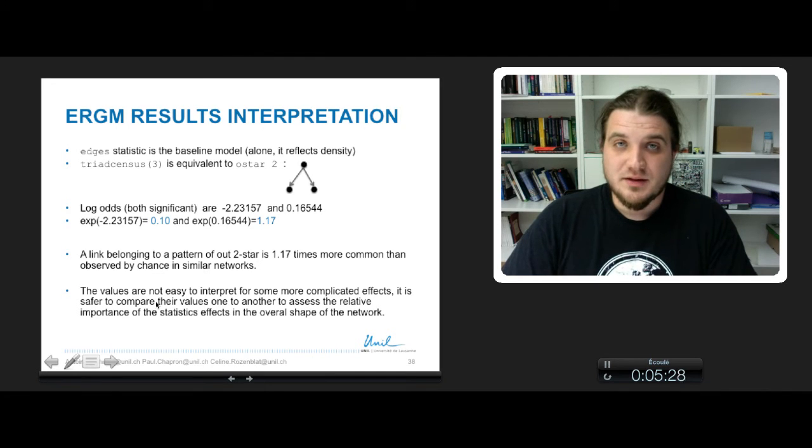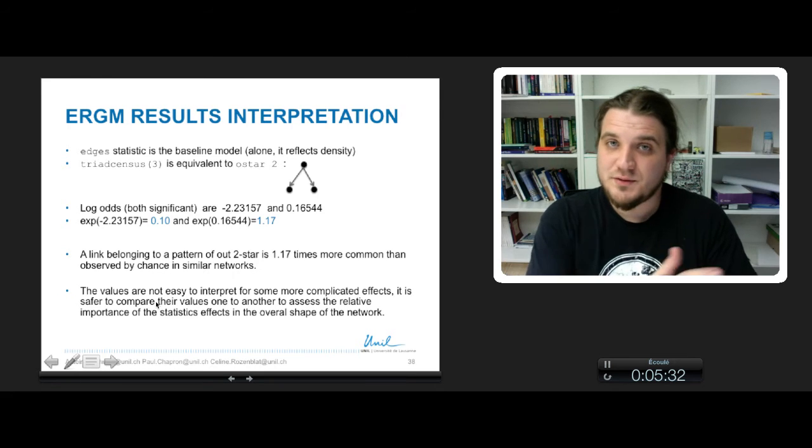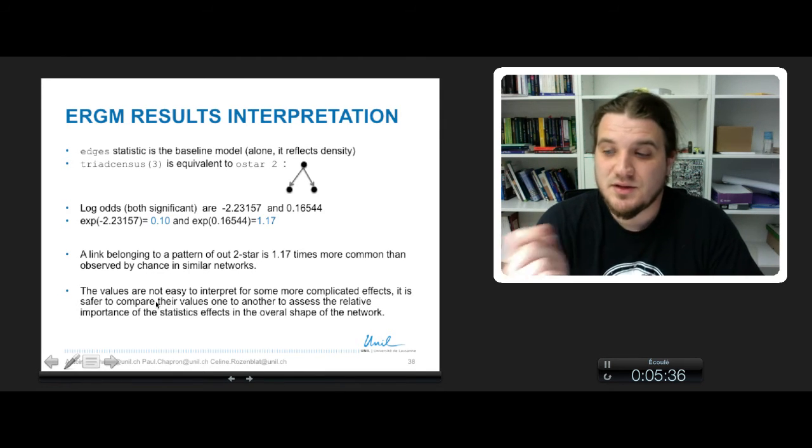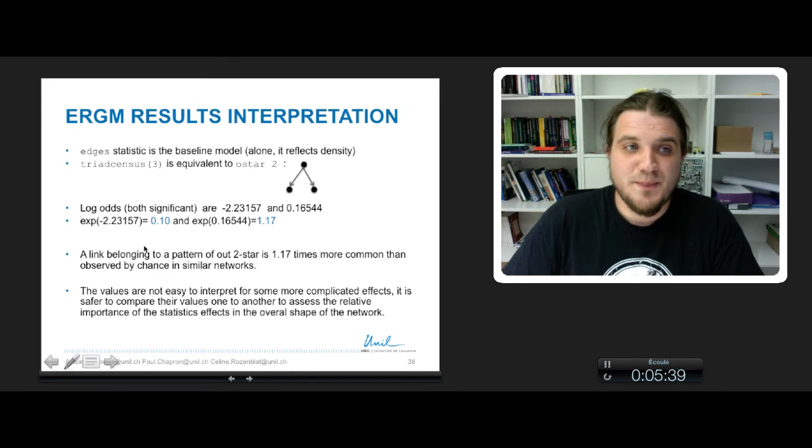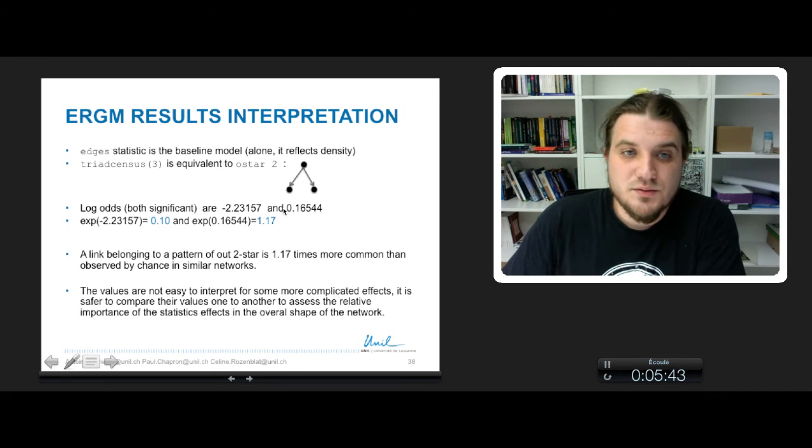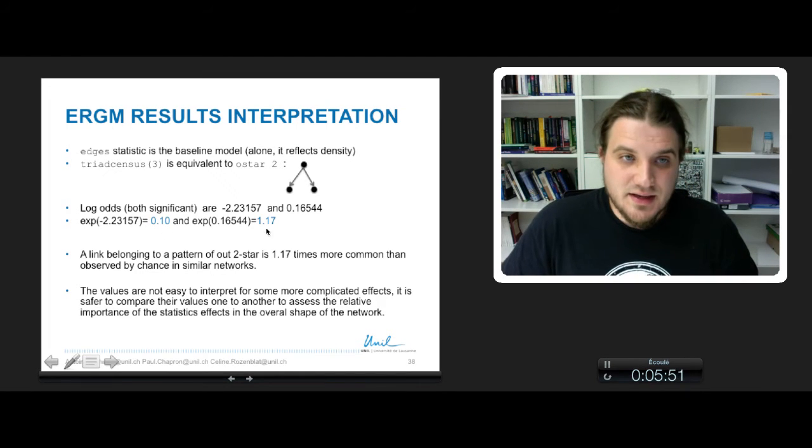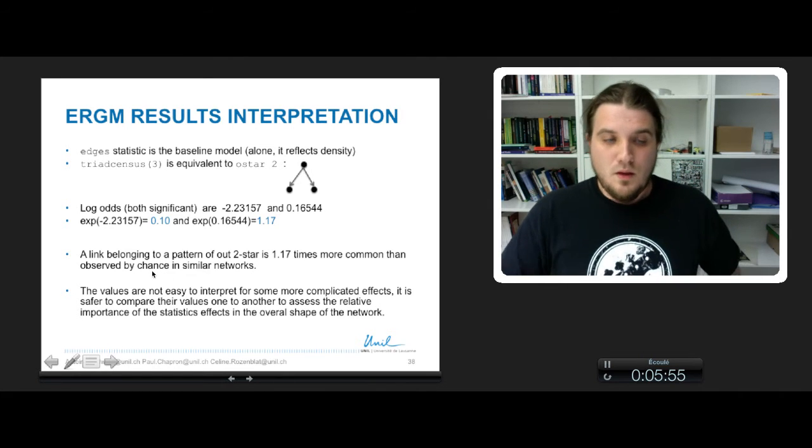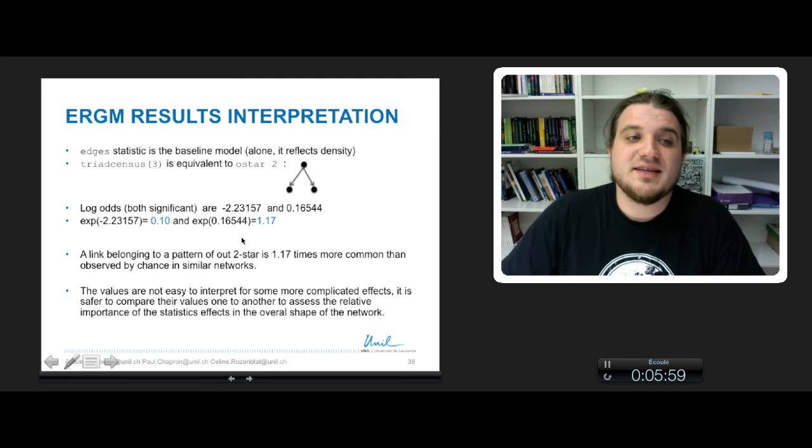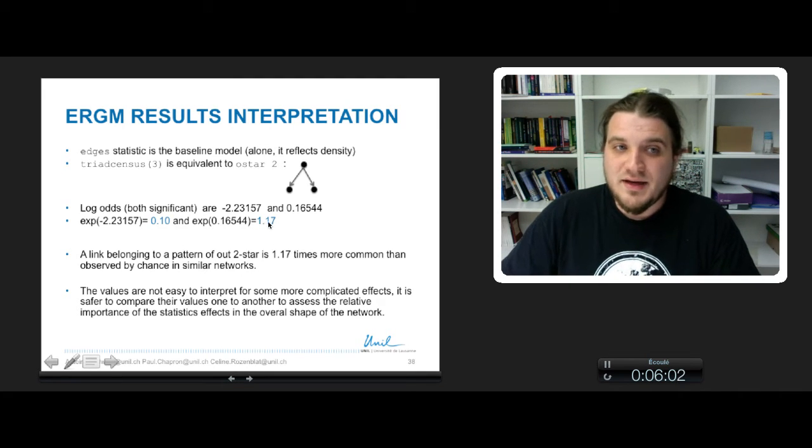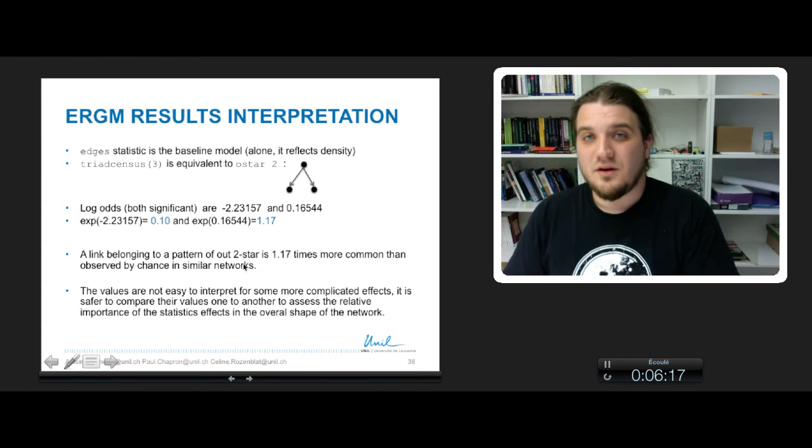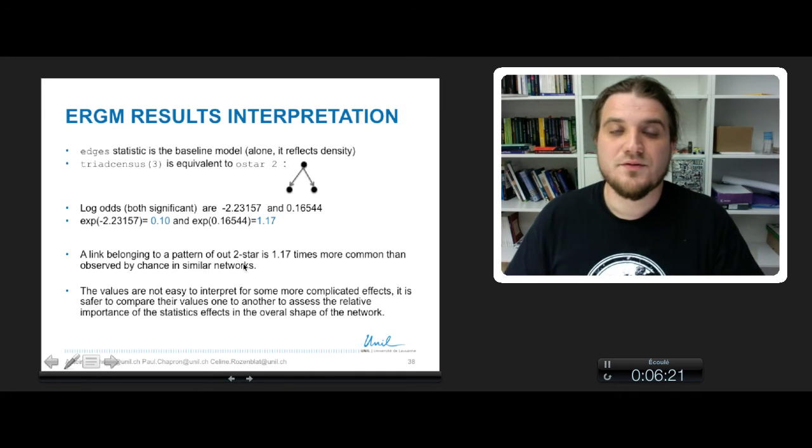ERGM results interpretation in the previous case of our simple model with edges and triad census for out-star-2 gave us these two values: minus 2.2 and 0.16. We take the exponential of these two values and we have 0.10 and 1.17. By looking at that, we can say that a link belonging to a pattern of 2-star is 1.16 times more common than observed by chance in similar networks, in the sense that not too far from our observed network.